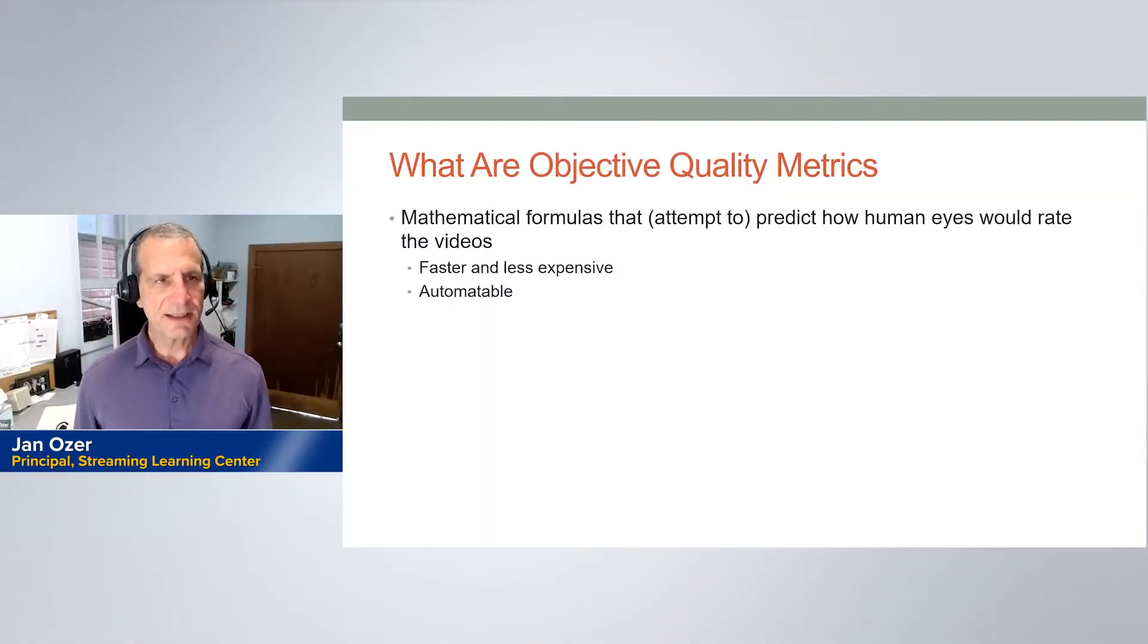Let's start with what objective quality metrics are. Essentially, there are mathematical formulas that attempt to predict how human eyes would rate videos. They have no value of their own really, it's just how well and how accurately do they predict how humans will view the videos.